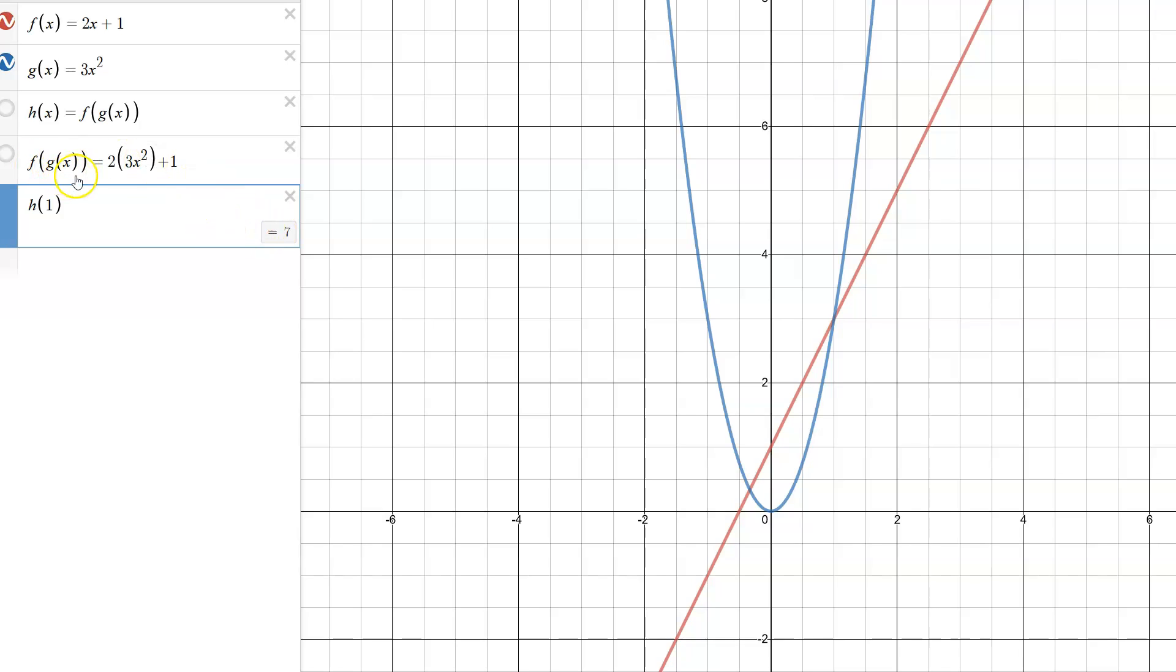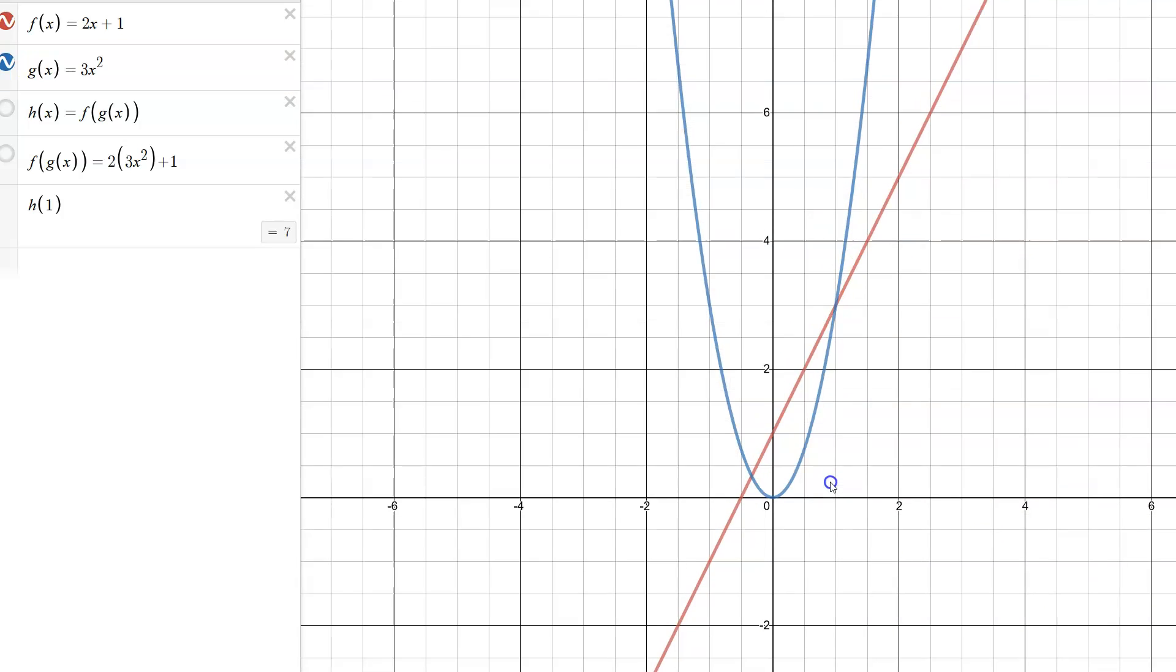If I go graphically, let's say this is all I had and I didn't actually have these formulas. I go to the inner input, g of one is the input's input, so I go to x equals one. G is the blue curve, so at x equals one g is at three.